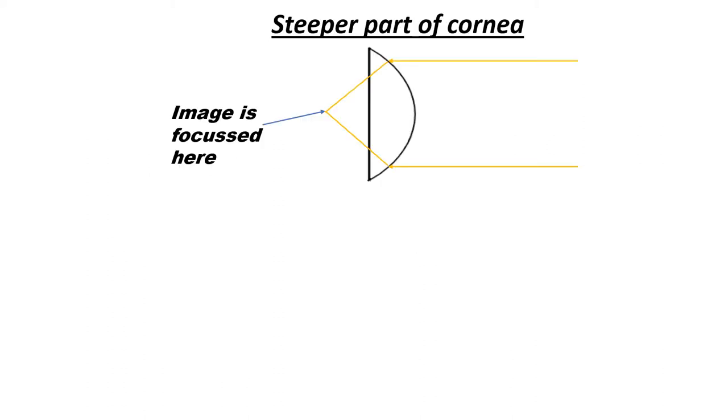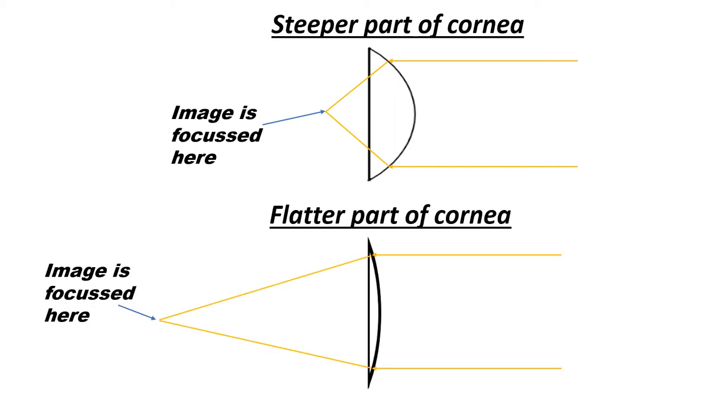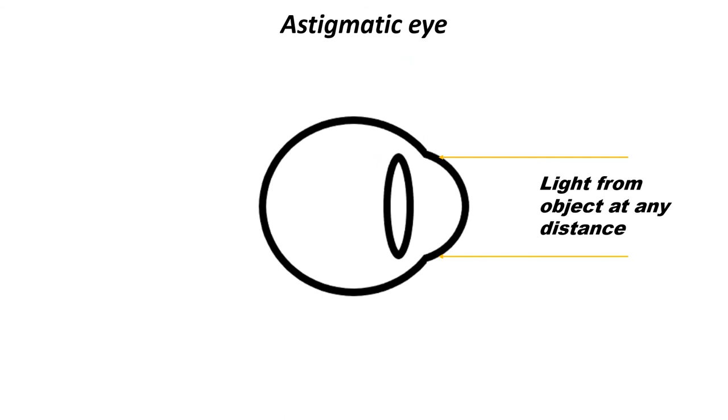The steeper part of the cornea is stronger and focuses light further forward, whereas the flatter part of the cornea is weaker and focuses light further back. So when light from an object at any distance away enters an eye that has astigmatism,